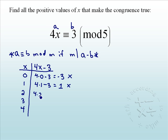We'll try 2. 4 times 2 minus 3 is 5. 5 does go into 5. So that means 2 is an answer.